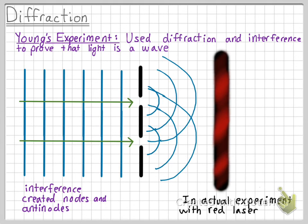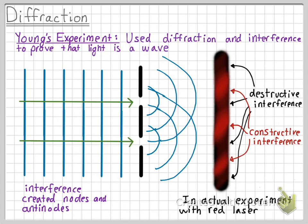For light in Young's experiment, the nodes and antinodes were present in the areas of bright and dark fringes within the light. The areas of darkness are when there was destructive interference within the diffracted light waves, and the areas of light are where there was constructive interference within the diffracted light waves.